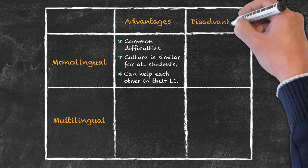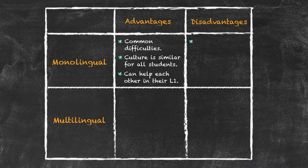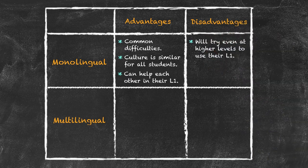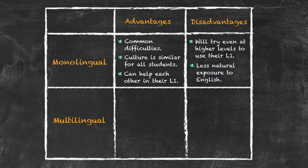What potential disadvantages are there with having a monolingual class? They can help each other in their L1, and whilst this may be okay at the lower levels, say up to pre-intermediate — and in fact it can often be more effective to allow them to do so — at the higher levels we should be discouraging that. Secondly, they will have less natural exposure to the L2 as a monolingual class. Teaching English to Thai students in Thailand means they're going to have less natural exposure to English than they would in England.